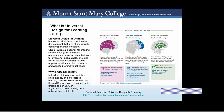Universal Design is a set of principles for curriculum development that gives all individuals equal opportunities to learn. UDL provides a blueprint for creating instructional goals, methods, materials, and assessments that work for everyone — not a single one-size-fits-all solution, but a flexible approach that can be customized for individual needs. The image here includes recognition networks (the what's of learning), strategic networks (the how's of learning), and affective networks (the why's of learning).